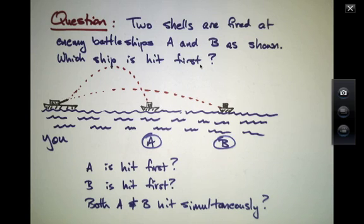If the little dotted lines indicate the trajectory of the shells that are used to aim and hit the enemy boats, I'd like to ask if you can guess which of the two ships is hit first.